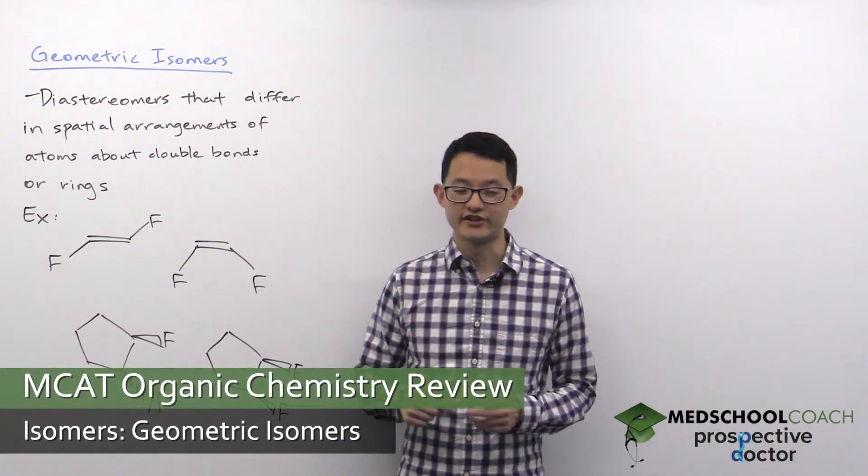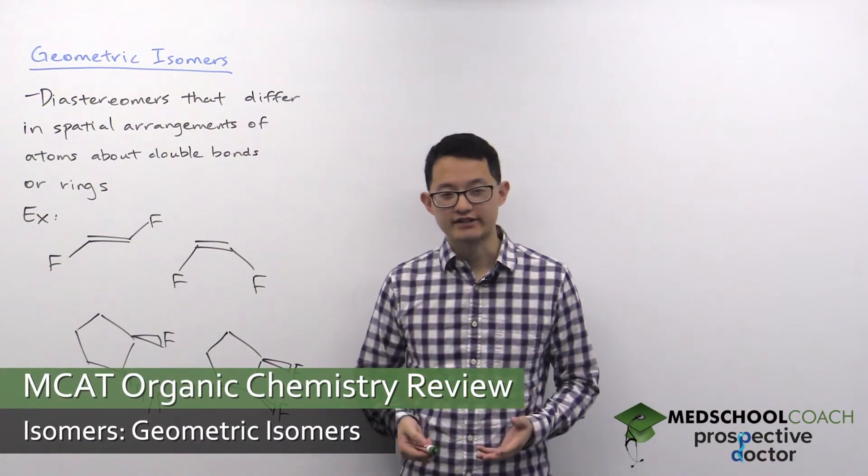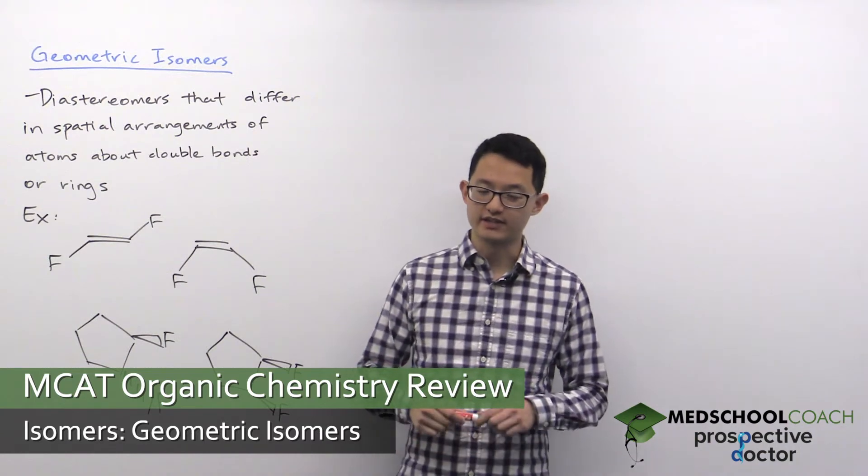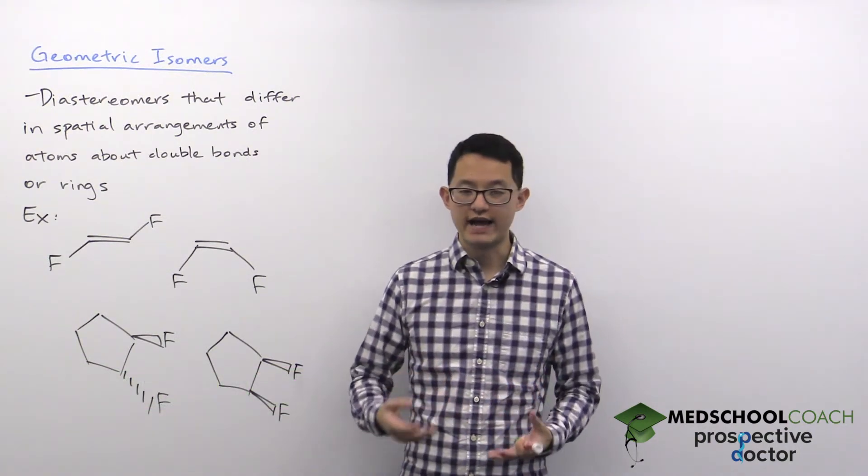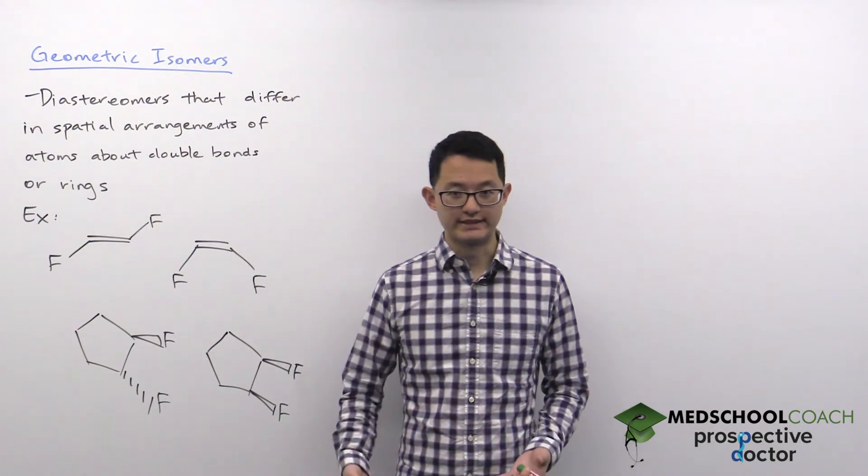All right, in this video we'll talk about geometric isomers. Geometric isomers are another subtype of diastereomers that differ in the spatial arrangements of their atoms across double bonds or rings.